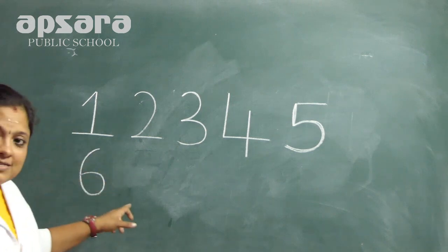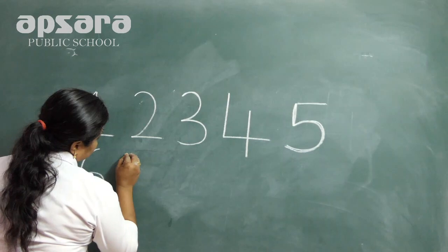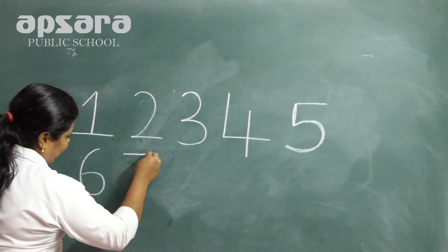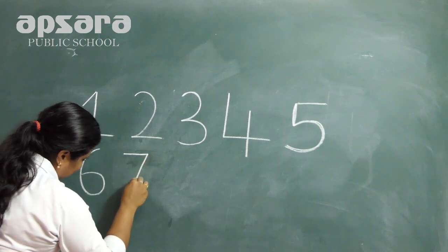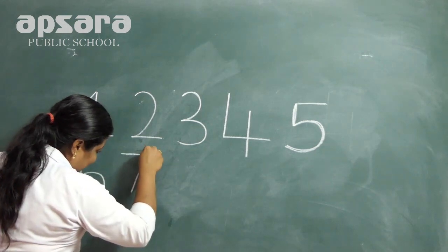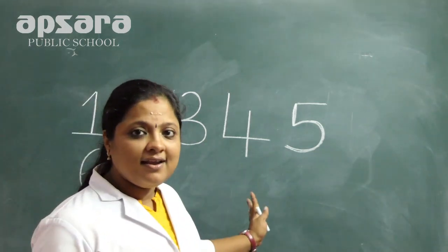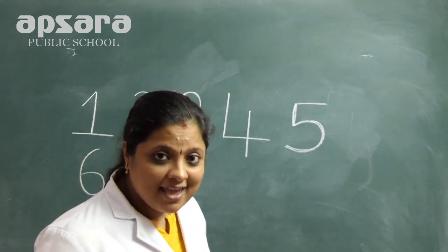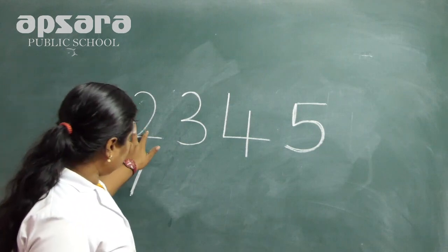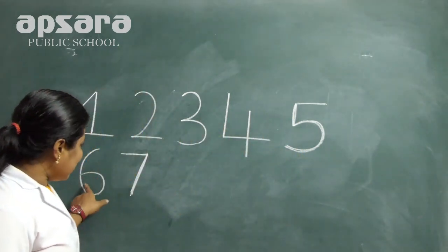What comes next? Seven. Sleeping line and standing line — you can say cross line. Sleeping line and standing line. Children, how many numbers are there? One, two, three, four, five, six, seven.